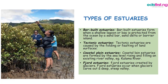Coastal plain estuaries are formed by sea level rising and filling an existing river valley. Fjord estuaries are created by glaciers — this occurs when glaciers carve out a deep, steep valley.